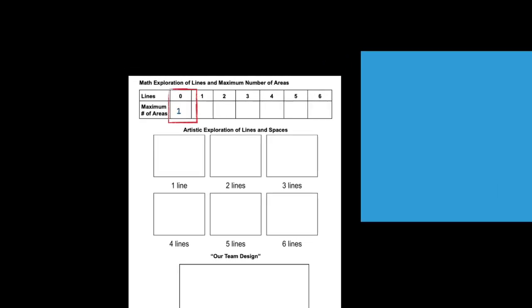If you don't divide this colored area with any lines at all, there's only one area here. On the page, find where it shows zero lines and write in a one. That's the maximum number of areas possible if you don't add any lines.